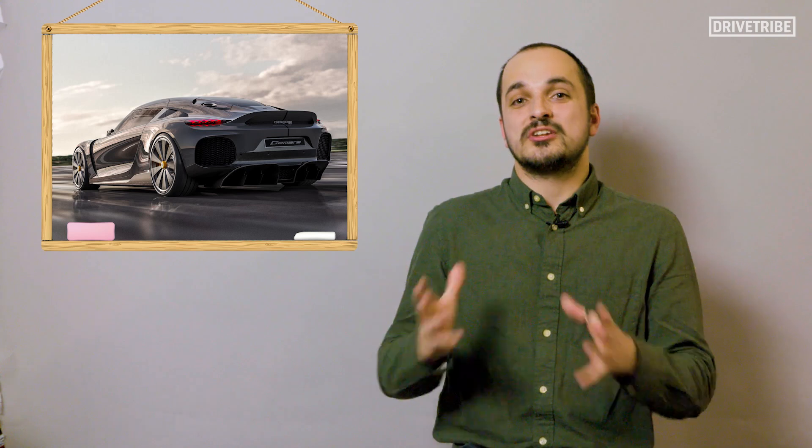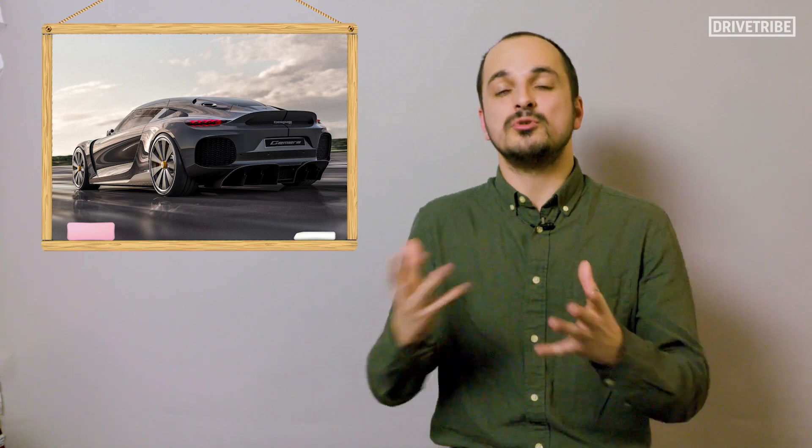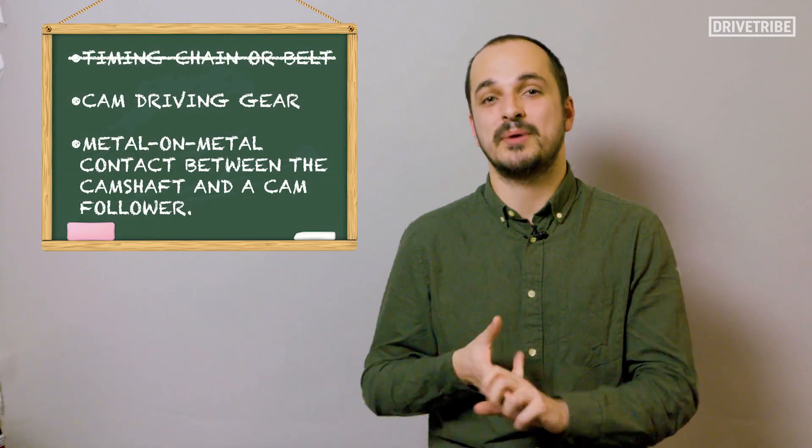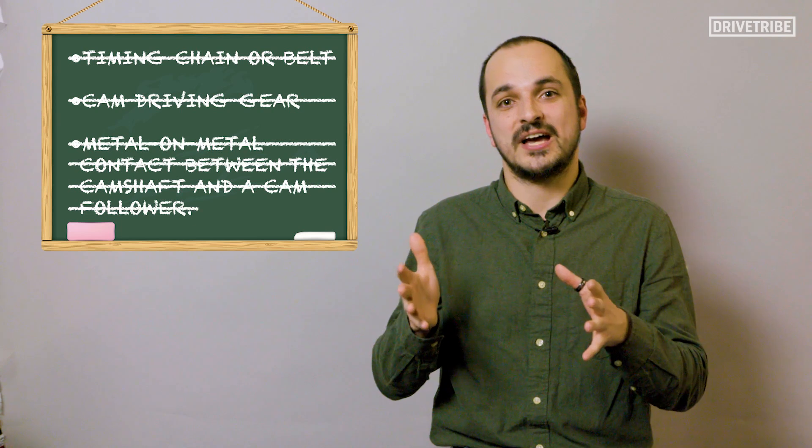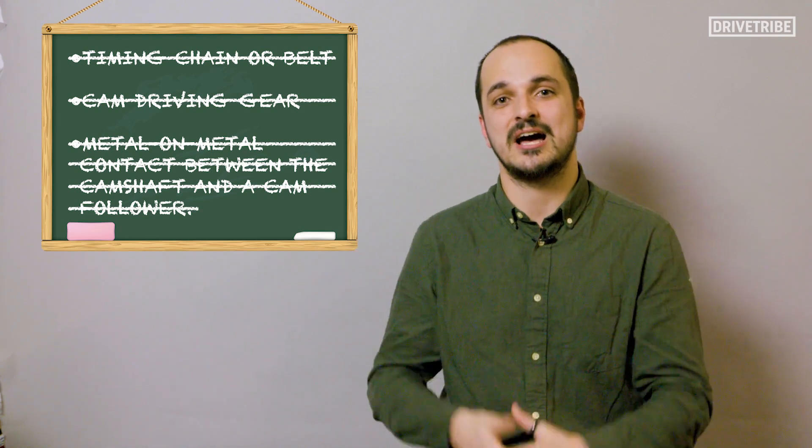As well as being able to control engine timing to a whole new level, there's also going to be less mechanical friction because there's no need for a timing chain or belt, a cam driving gear, and there's also not going to be that metal on metal contact between a camshaft and a cam follower.